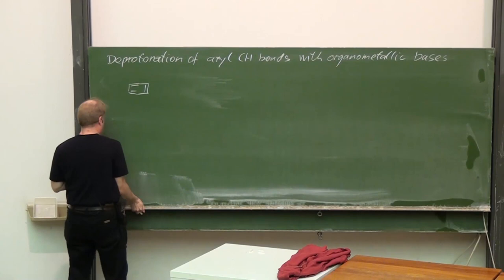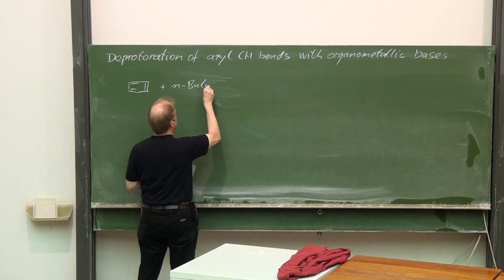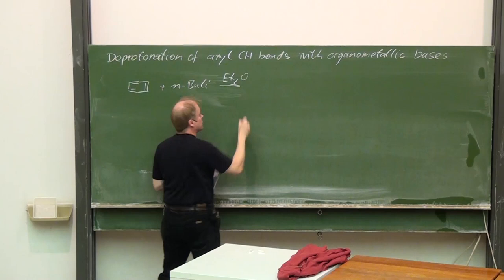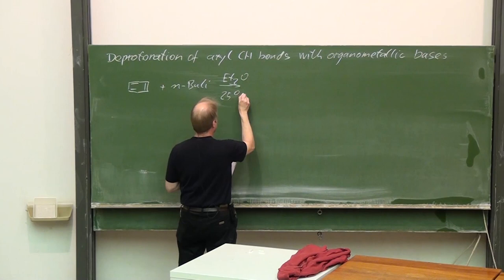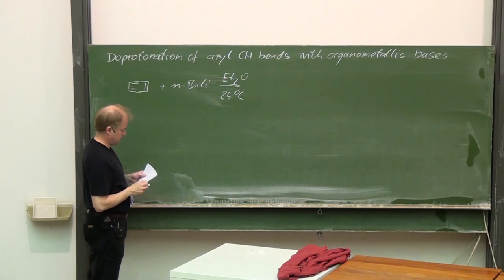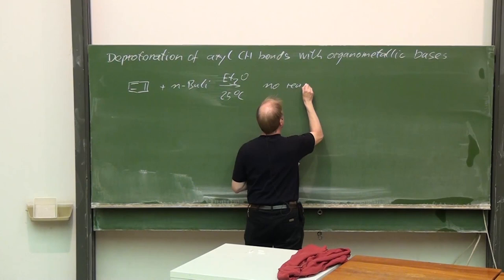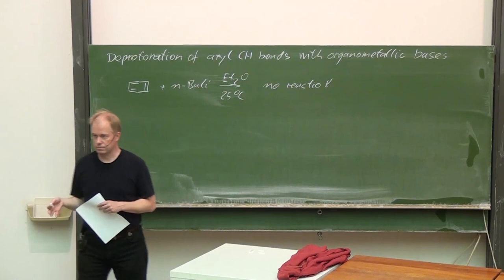Benzene plus n-butyllithium in diethyl ether at room temperature, approximately 25 degrees — there we have no reaction on a reasonable time scale.